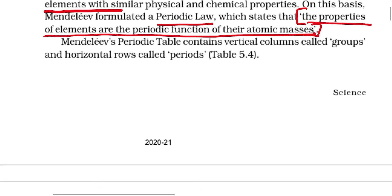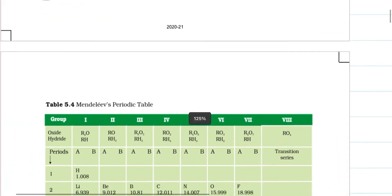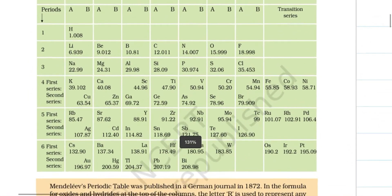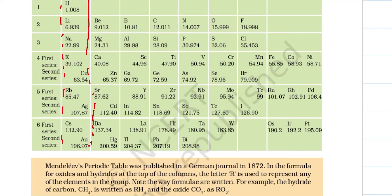Mendeleev's periodic table contains vertical columns called groups and horizontal rows called periods, which is very similar to the modern periodic table. He had 8 groups and 6 periods, from period 1 to period 6. You can observe these groups as vertical columns and periods as horizontal rows in the Mendeleev's periodic table shown here.